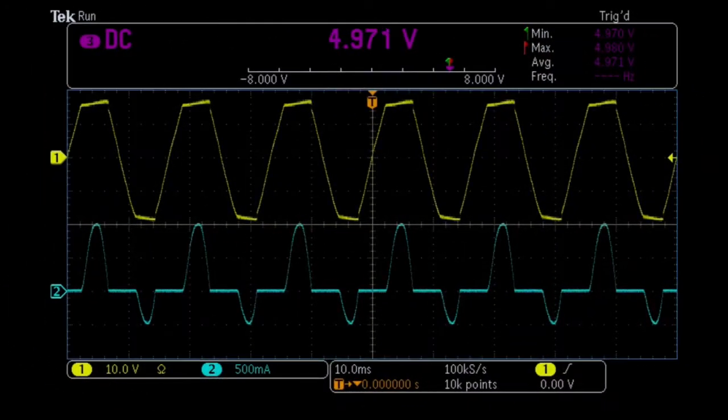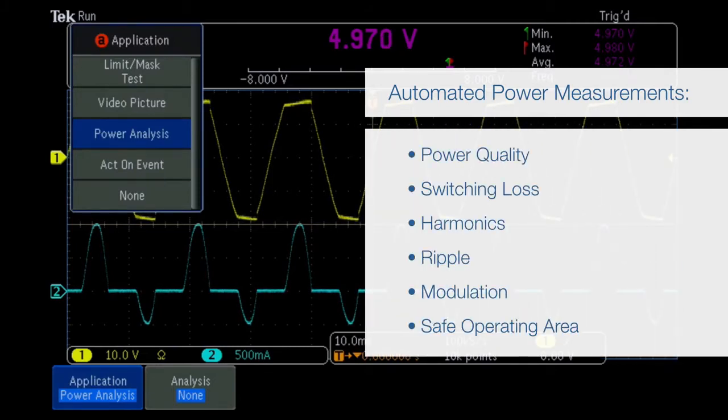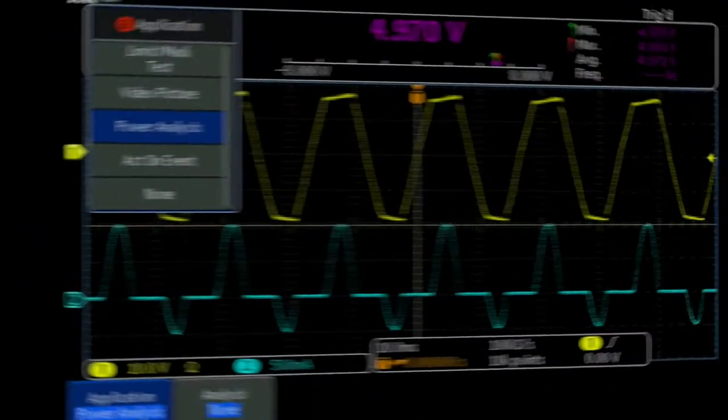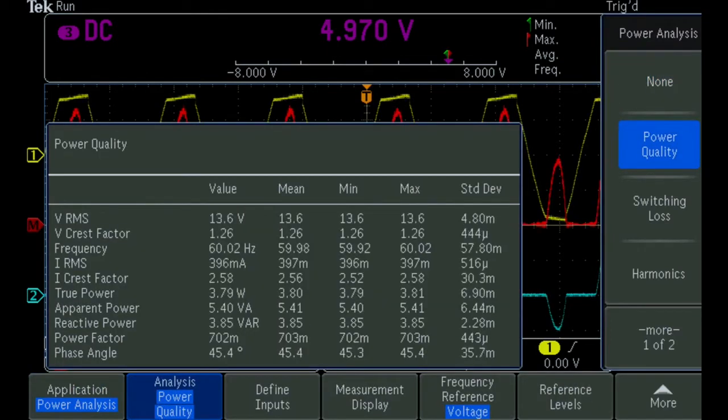The optional MDO3000 power measurement application automatically makes a variety of measurements with the push of a button, easily and repeatably. Here are the input power quality measurements, including power, crest factor, and power factor, which characterize the effects of the power supply on the AC power source.